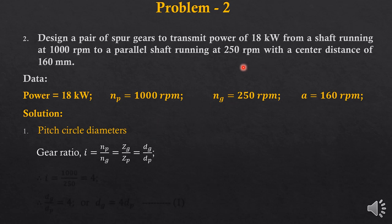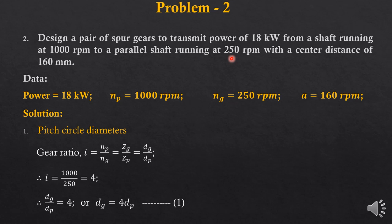The speeds are known to us: speed of pinion is 1000 rpm and speed of gear is 250 rpm. Therefore, we obtain the gear ratio as 4, and using that we get the first equation: diameter of the gear is equal to 4 times diameter of the pinion, i.e., dG = 4 × dP.